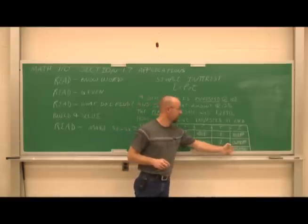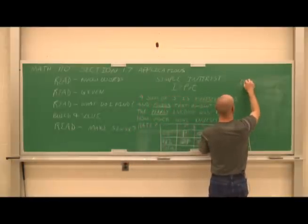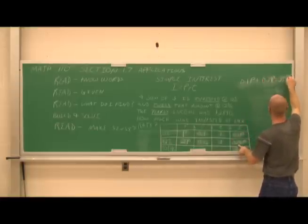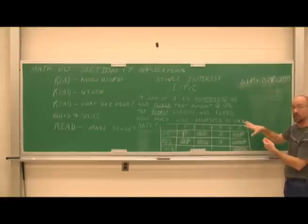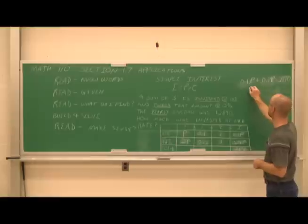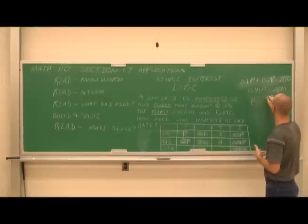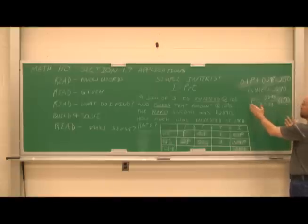The total interest is $2,890. To find a total, we add. So the equation is: 0.1P + 0.24P = 2890. This interest plus this interest equals the yearly interest. Now solving: combining like terms gives 0.34P = 2890. Dividing both sides by 0.34 gives P = 8,000.